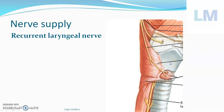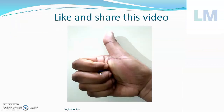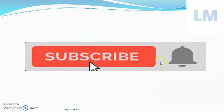Damage to the external laryngeal nerve results in paralysis of the cricothyroid, so tension in the vocal cord cannot be raised and the person can't raise their voice. The thyroarytenoid muscle is the relaxer of the vocal cord — if you want to speak softly and gently, you use your thyroarytenoid muscle to relax your vocal cord. Like and share this video, press the thumbs up button, subscribe to my channel and press the bell button for the latest notifications. Thank you!